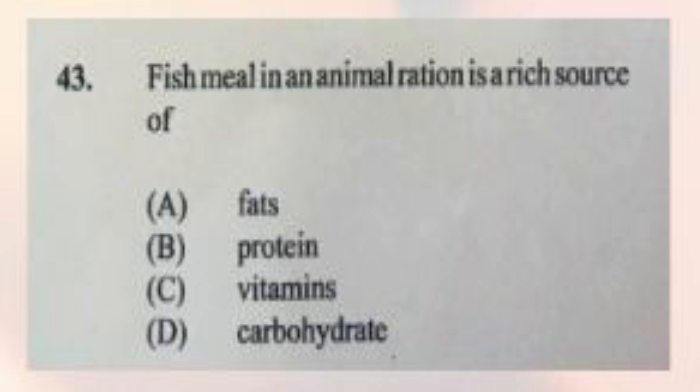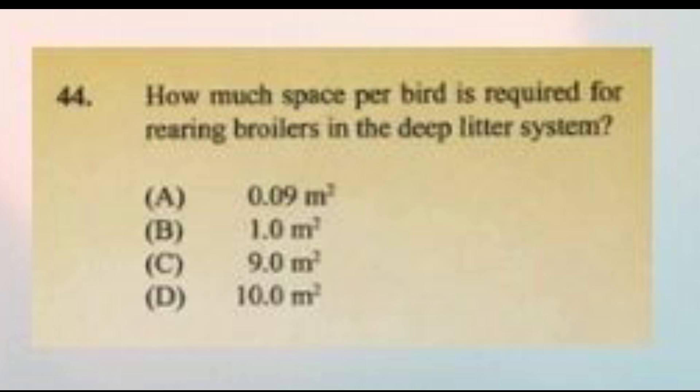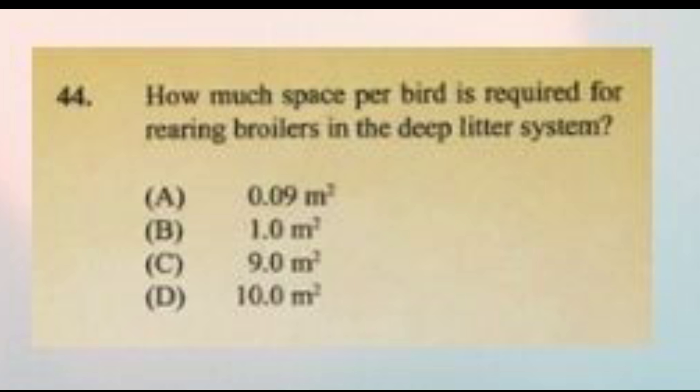Question number forty-three: fish meal in an animal ration is a rich source of A) fats, B) protein, C) vitamins, D) carbohydrates. The answer is B, protein. Question number forty-four: how much space per bird is required for broilers in the deep litter system? A) 0.09 m², B) 1 m², C) 9 m², D) 10 m². The answer is A, 0.09 m², which is equivalent to approximately one square foot.